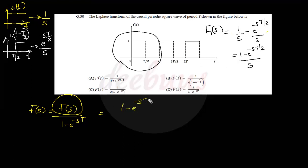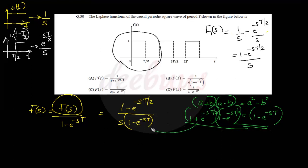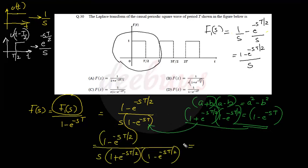Using the identity (a − b)(a + b) = a² − b², I split (1 − e^(−sT)) as (1 − e^(−sT/2))(1 + e^(−sT/2)), since (1)² − (e^(−sT/2))² = 1 − e^(−sT). Cancelling the common terms, the final answer is 1/s multiplied by 1/(1 + e^(−sT/2)). So the answer is option B.